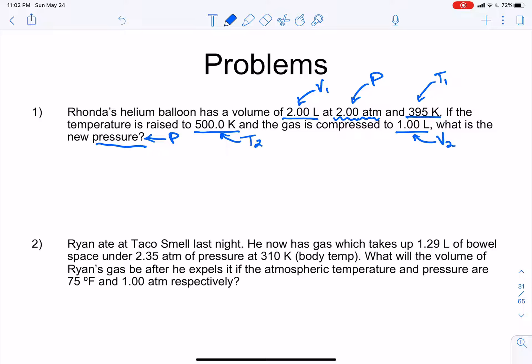So again, if we've got two variables, we've got to have a 1 and a 2. Again, you'll also want to keep the sets together. So 2 liters goes with 2 atm and 395. And we don't want to mix those up, because it'll give us the wrong answer. And that's no good, because we don't get any points for a wrong answer.